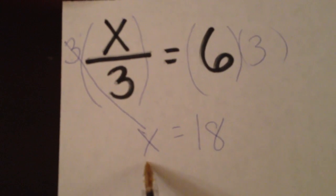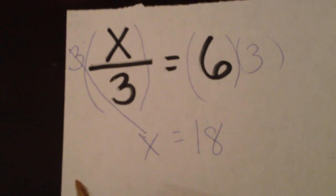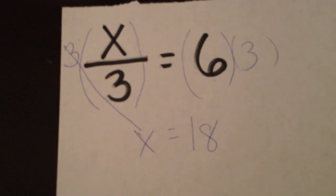We can check that by saying x equals 18. So 18 divided by 3 equals 6, which is correct. We know that x equals 18 is our answer.